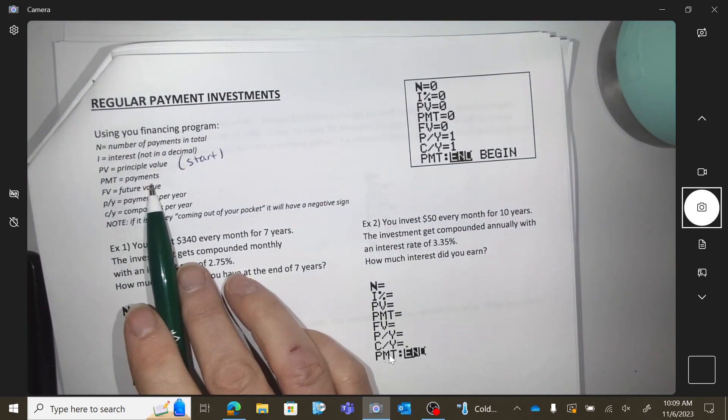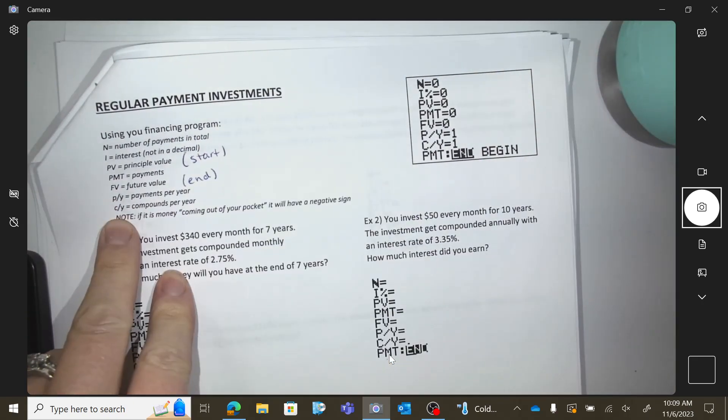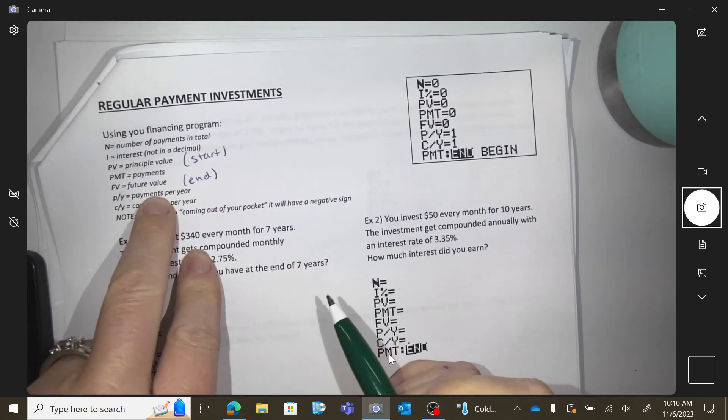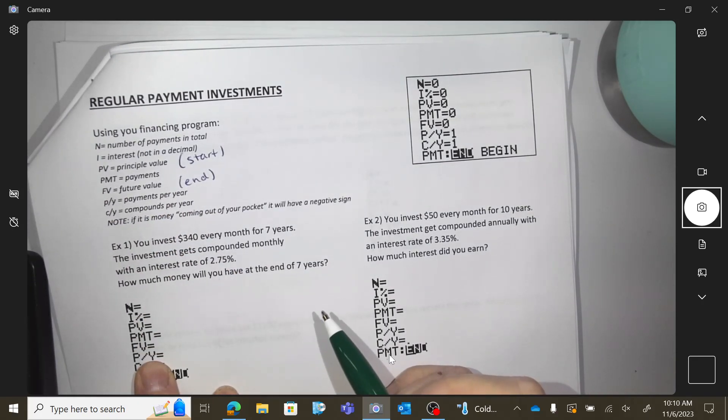Payments, PMT are payments. Future value, right? So, the end. How many payments per year you make, how many compounds per year you make.